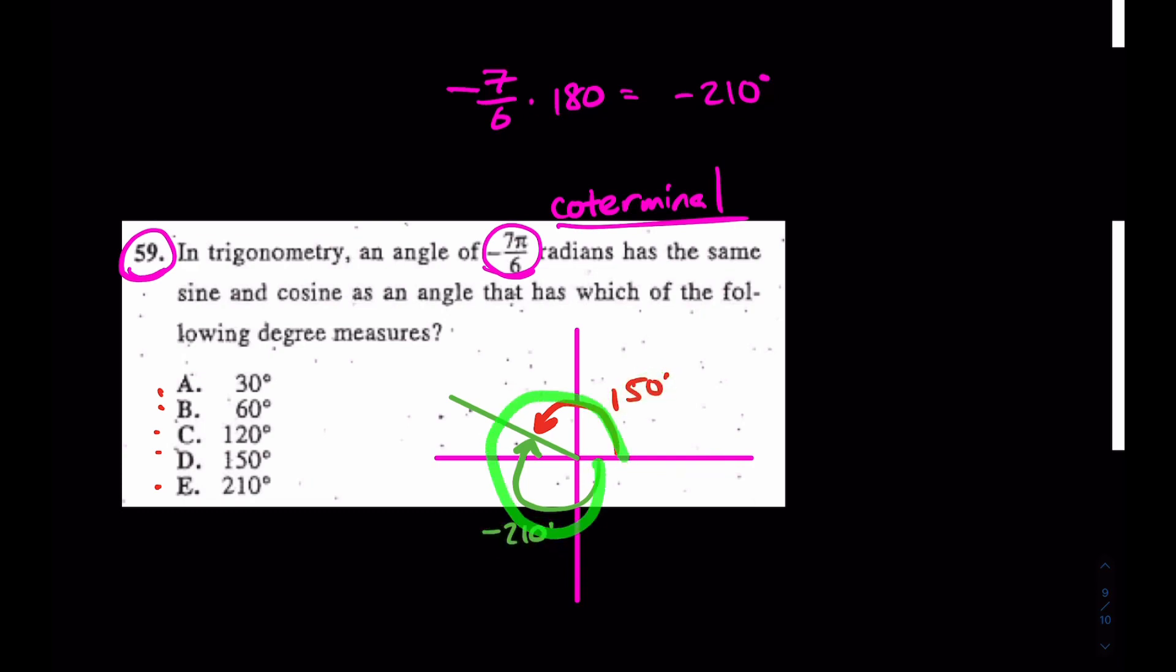All the way around would be 360. So again, if this is -210, what must this guy be? Positive 150. That's good for 59.